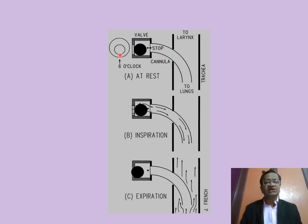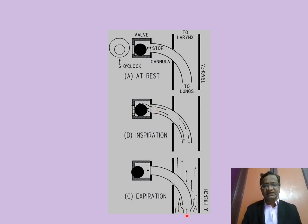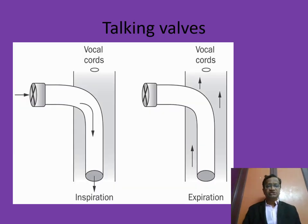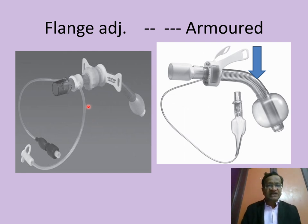Here — air is going to the lungs for ventilation, and also toward the larynx. Normally with the cuff inflated, air goes toward the lungs, but if it pushes into the area above the cuff, it escapes through the fenestrations to the larynx. This is the talking tracheostomy — the vocal cords vibrate on inspiration and talking occurs. Flanges may also be adjusted.